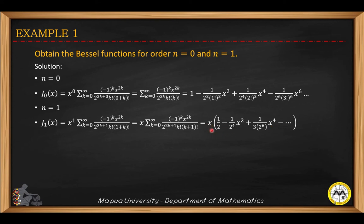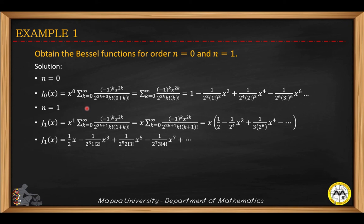Multiplying by x gives a series with odd powers of x. Since J sub zero has even powers of x, its graph looks similar to the cosine function. And since J sub one is an odd series in x, its graph is quite similar to the sine function.